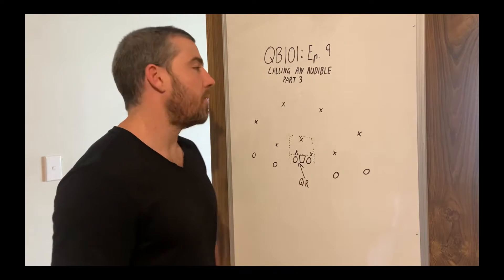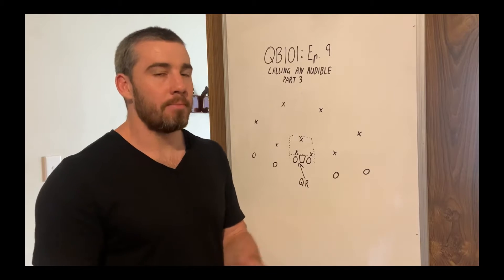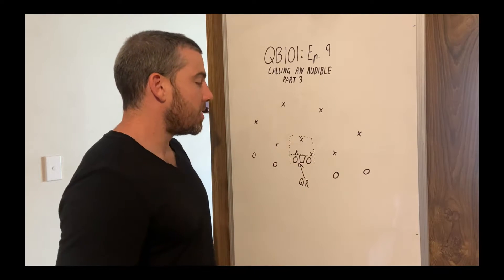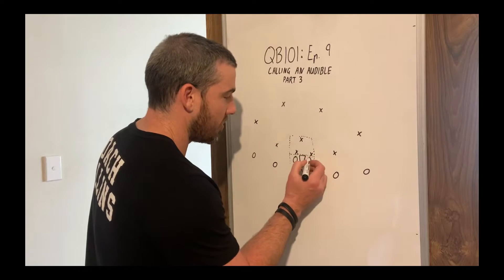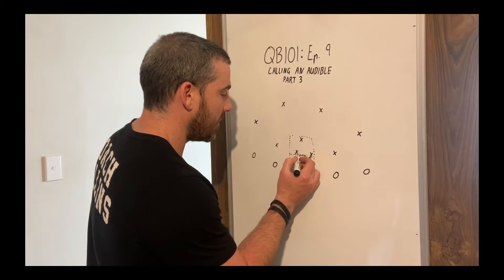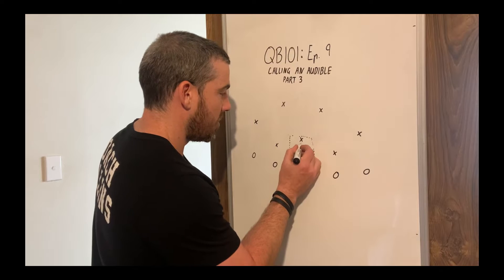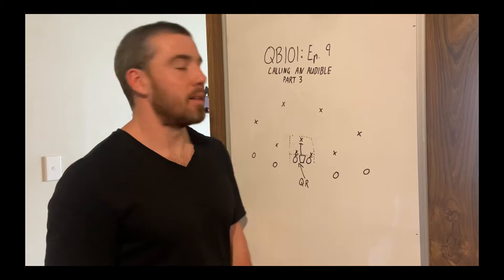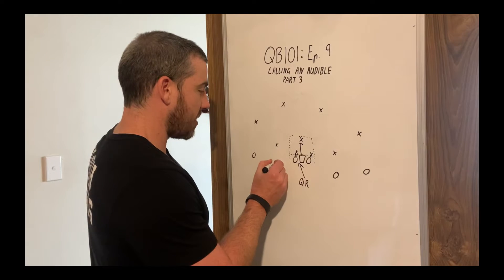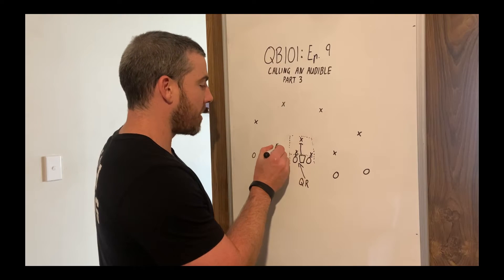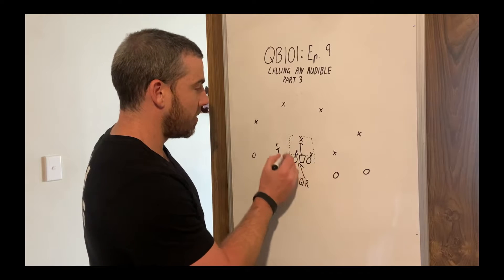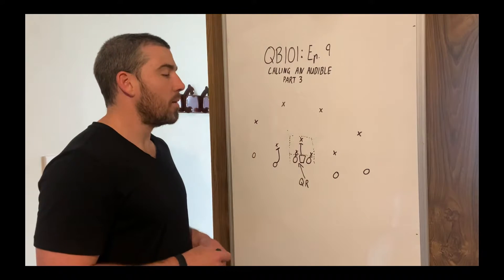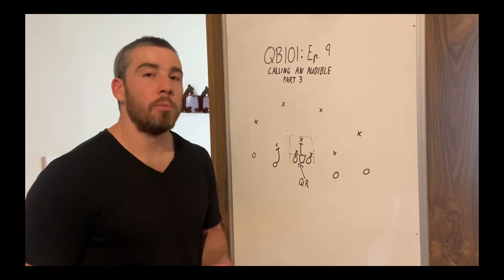So your check to dive left might be dolphin. It doesn't matter what the word is. As long as everyone knows that dolphin we are diving left, we are blocking this up like this and we can run that dive. Easy three, four yards. And if this outside linebacker gets blocked by the slot, we might even get seven, eight yards before the safety makes the tackle.